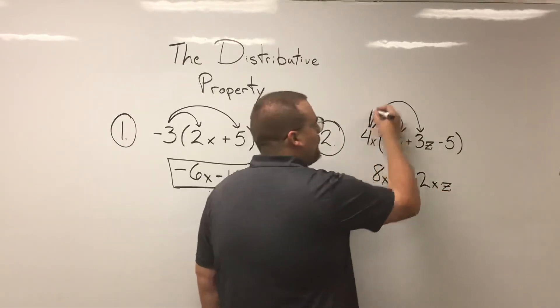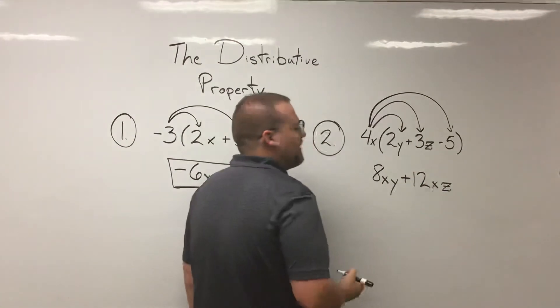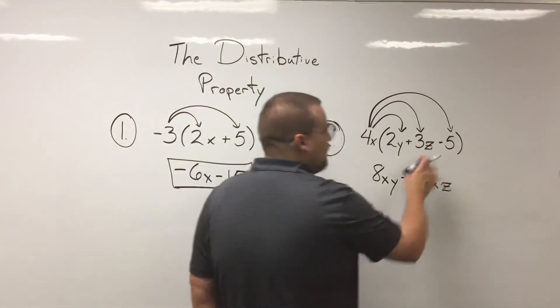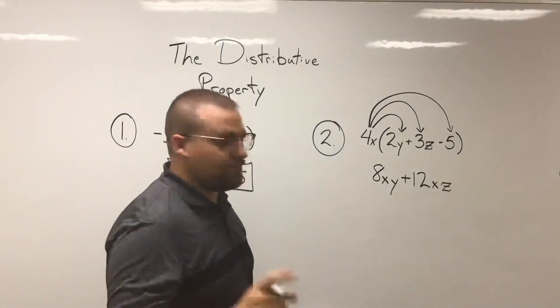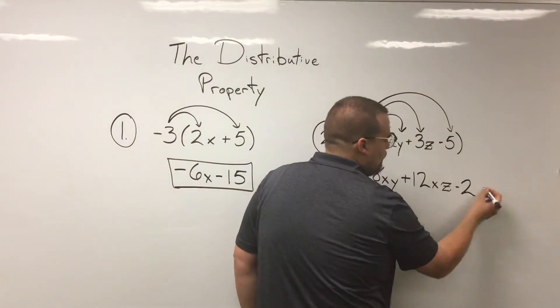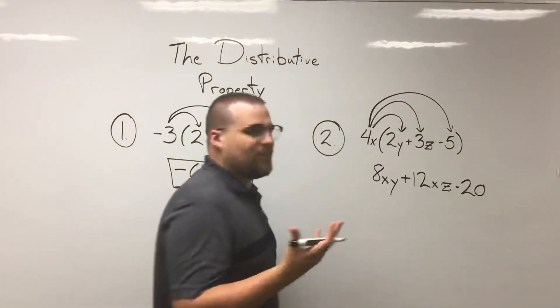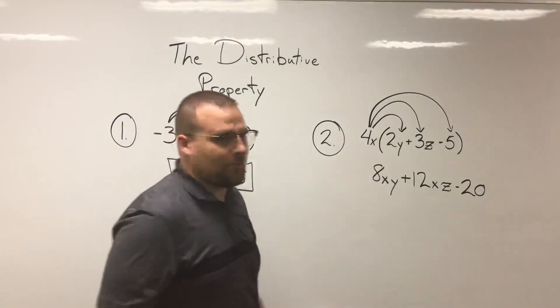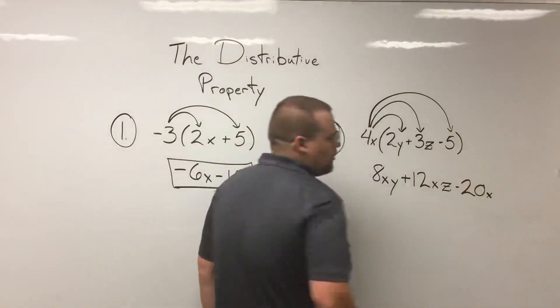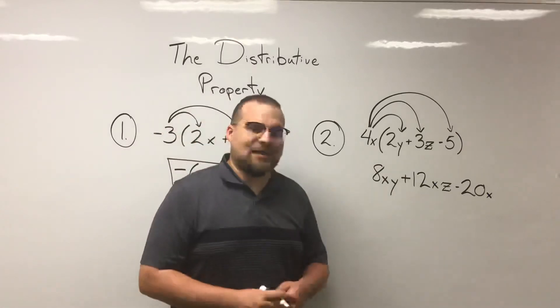Finally, the 4x is going to multiply the negative five. Four times negative five - always remember the sign right before the number has to go with it - makes negative 20. And then this one we only have one variable, that x right here. So it's going to just get written right alongside that negative 20, negative 20x.